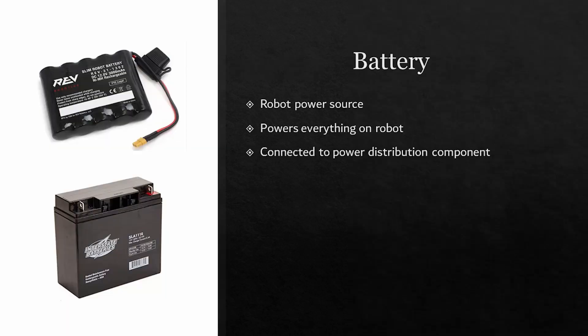First, we have the battery on the robot. This is arguably the most important part of the electrical system, because without it, the robot wouldn't run. It is the main power source for the robot and powers everything on the robot.